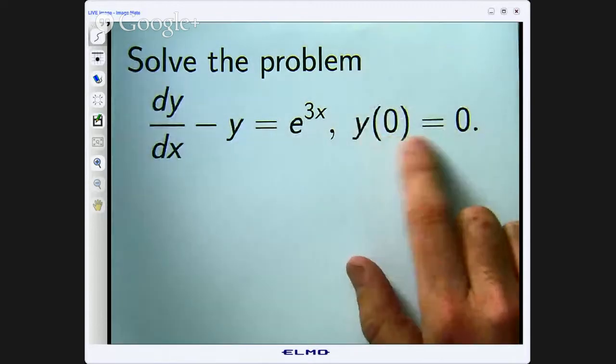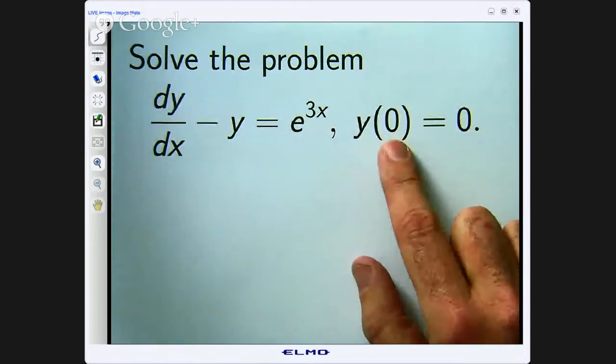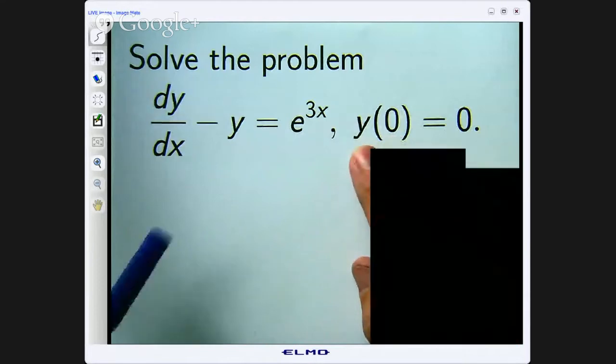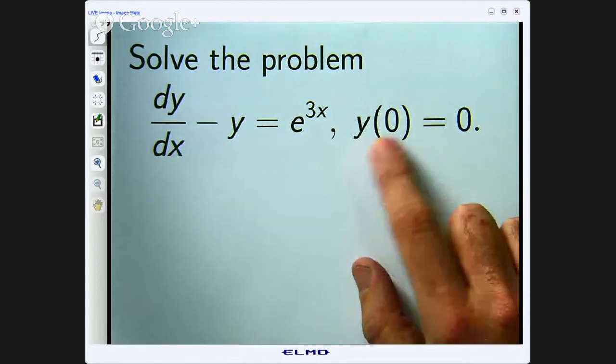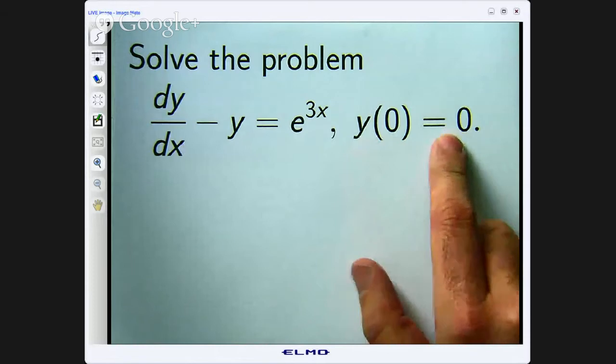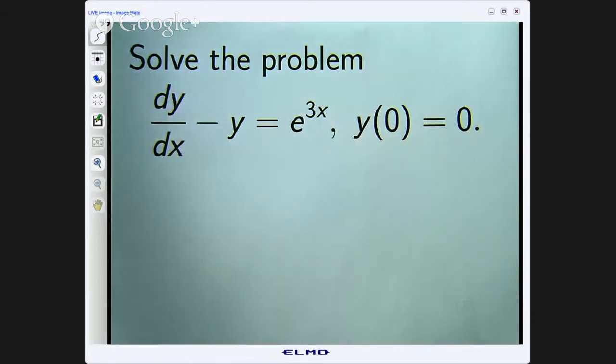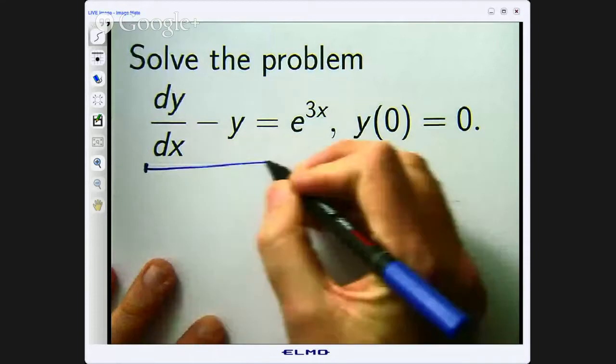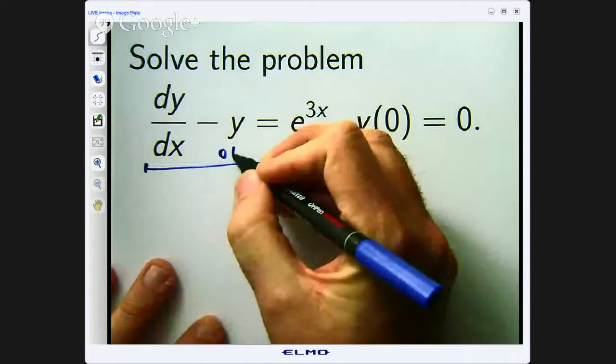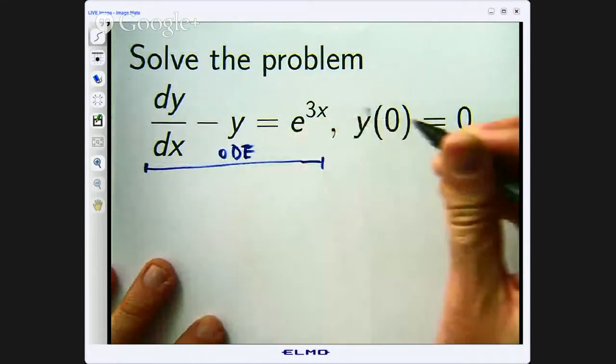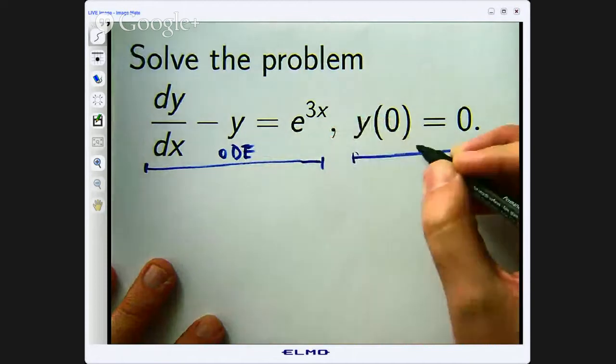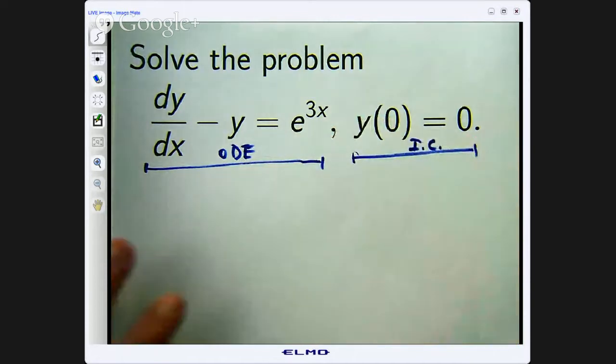And this extra bit of information over here tells us that when x equals 0 the function y has to also equal 0. So this is known as an ODE ordinary differential equation and this is known as an initial condition or IC.